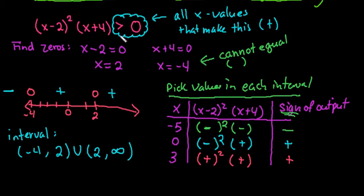And everything from 2 to positive infinity also gives us a positive output. Had this been greater than or equal to, we could have just said negative 4 to infinity, but we're excluding 2 because that's where it equals it, so that's why I had to write it this way.